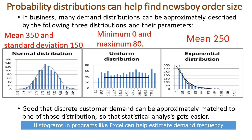Each distribution has some parameters: for normal distribution it's mean and standard deviation; for uniform distribution it's minimum and maximum; and for exponential it's only mean. Observed values do not perfectly match those distributions, but we can still approximately fit them to these theoretical distributions. Programs like Excel can help easily make histograms, and by observing the plots of frequencies, we can decide which distribution and corresponding parameters to use.